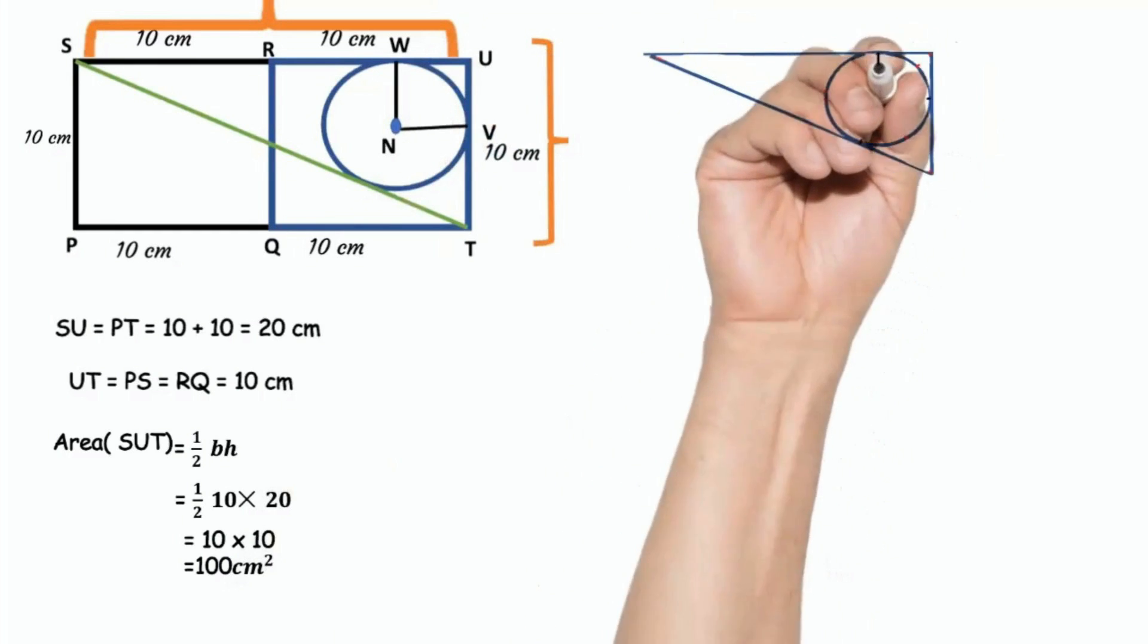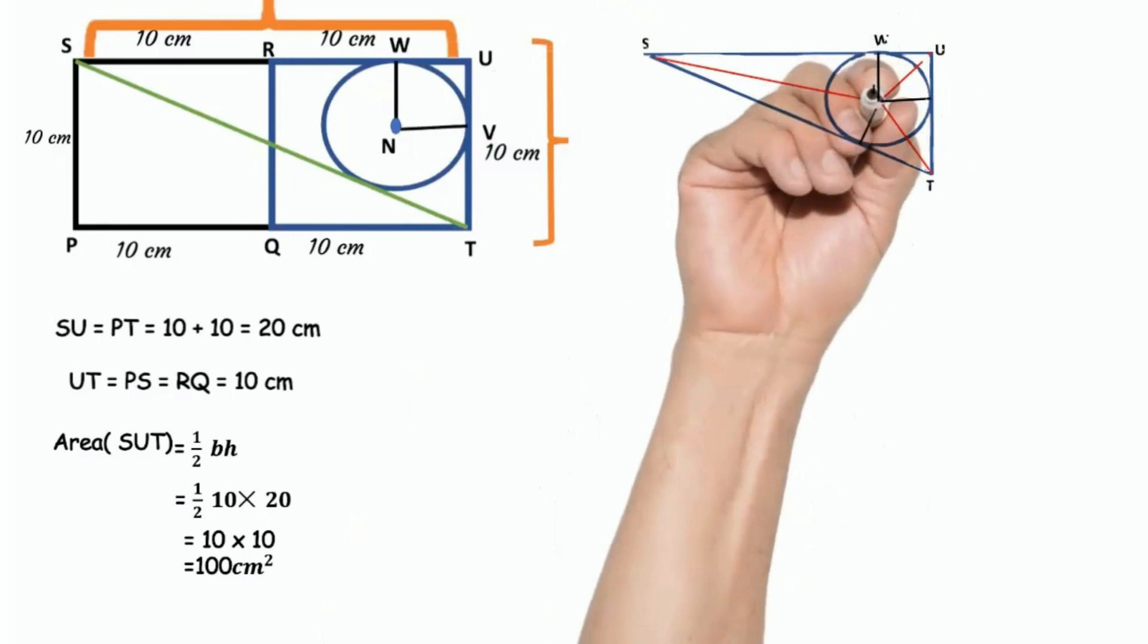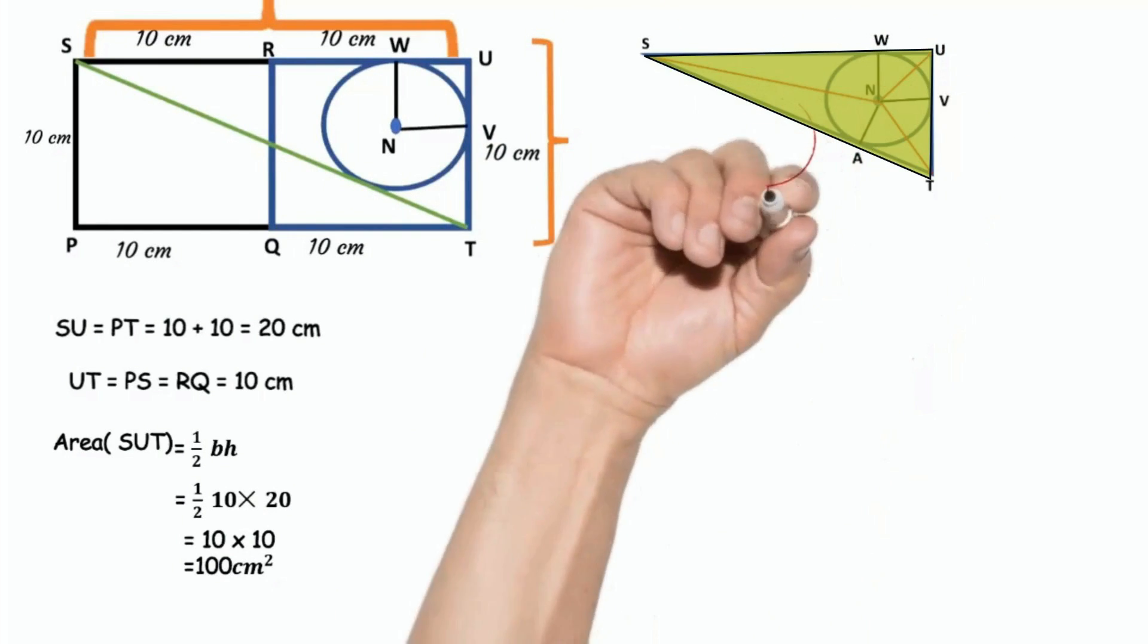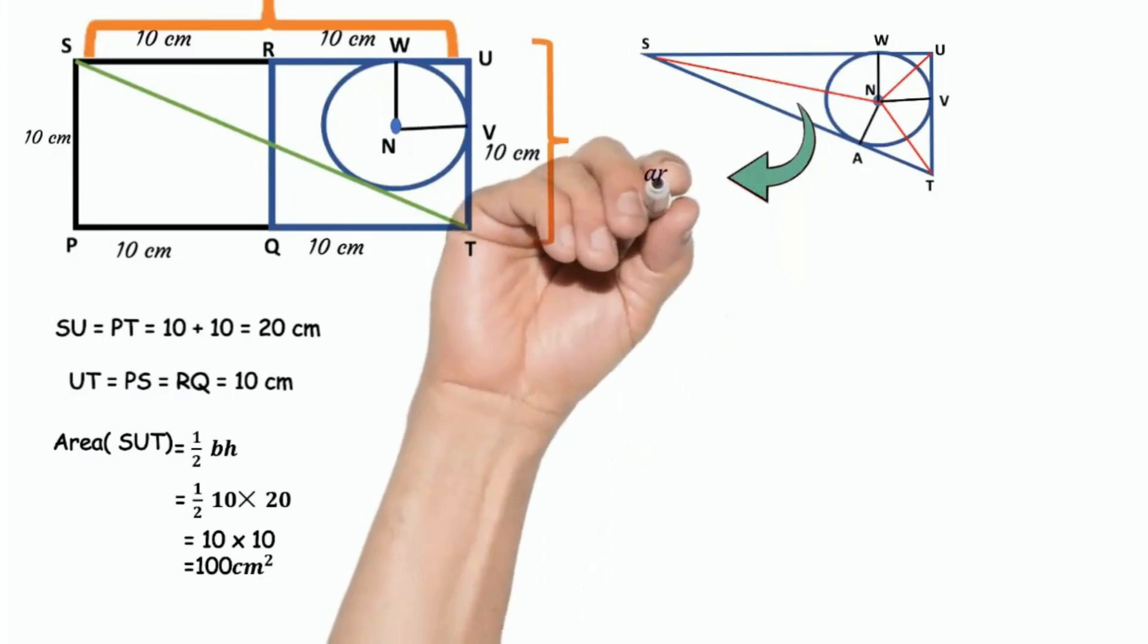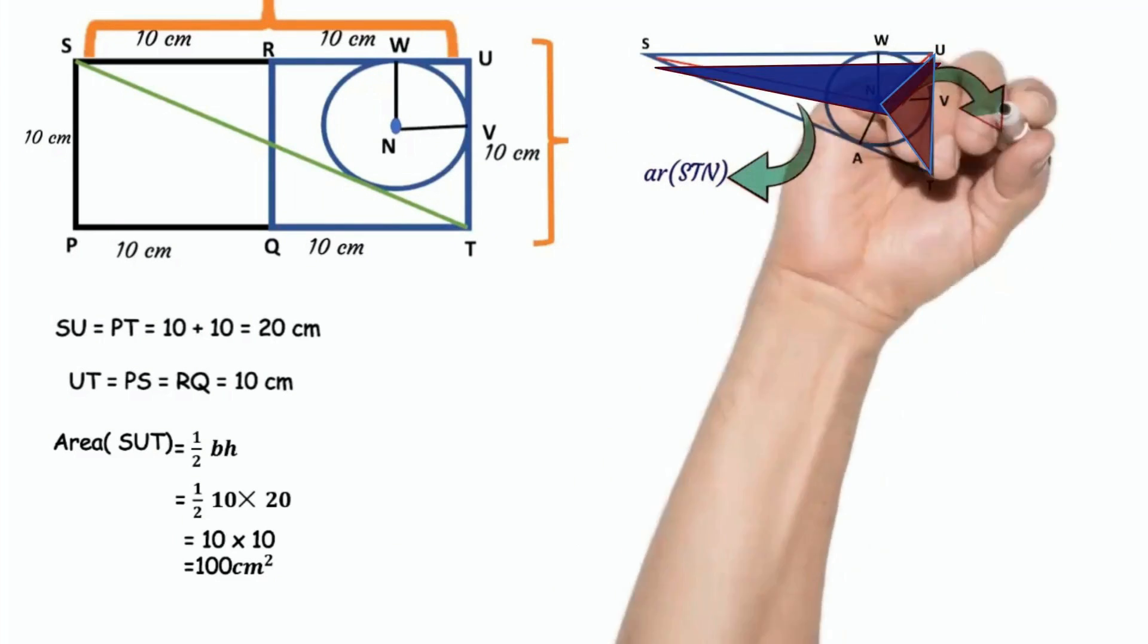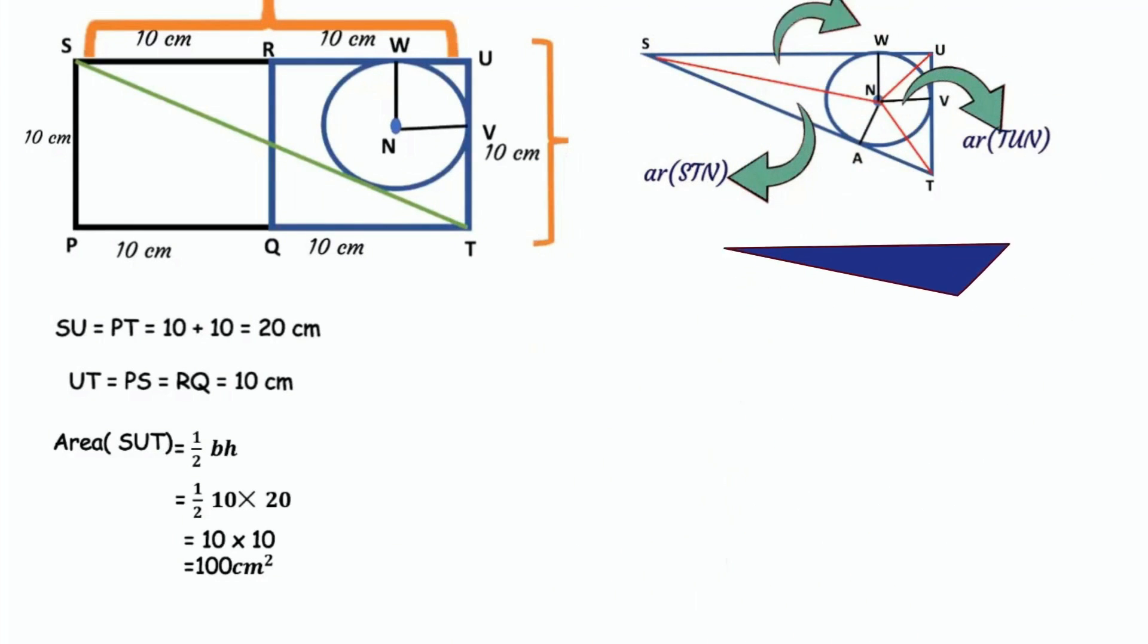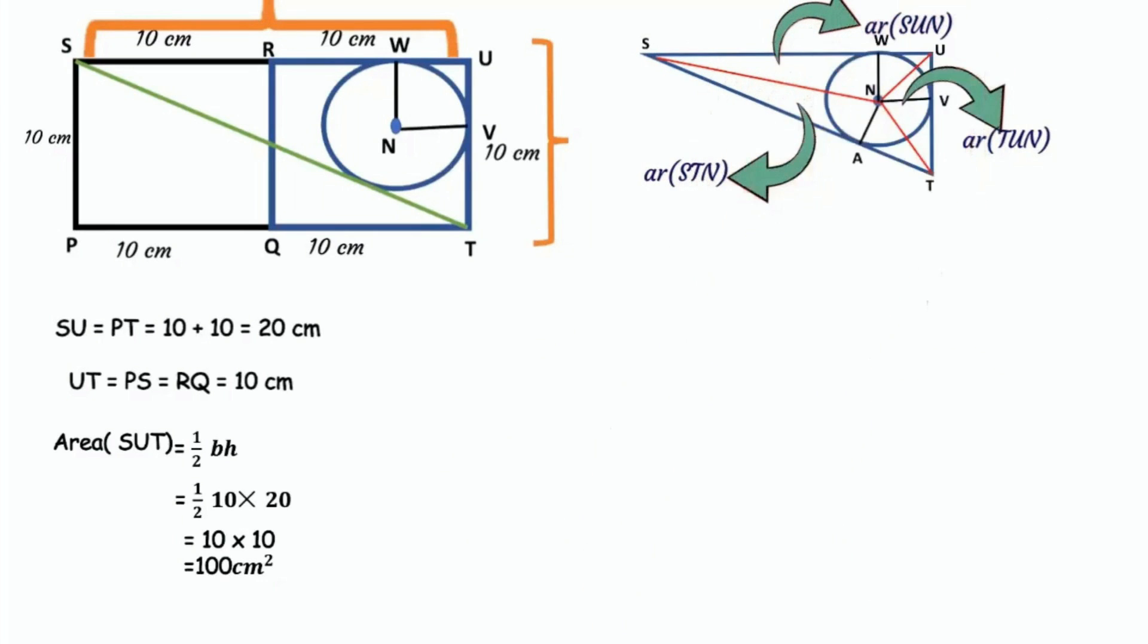Now we got area of triangle SUT, join SN, DN and UN. So we get three triangles. These three triangles are the part of right angled triangle SUT. Some of the areas of these three triangles are equal to the area of triangle SUT.